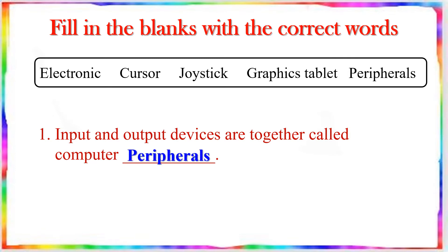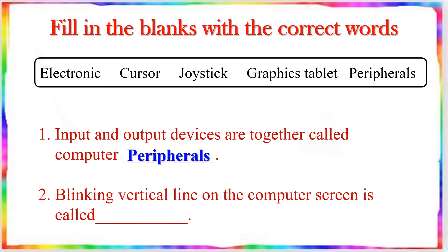Question number 2: Blinking vertical line on the computer screen is called dash. Answer is cursor. Blinking vertical line on the computer screen is called cursor.